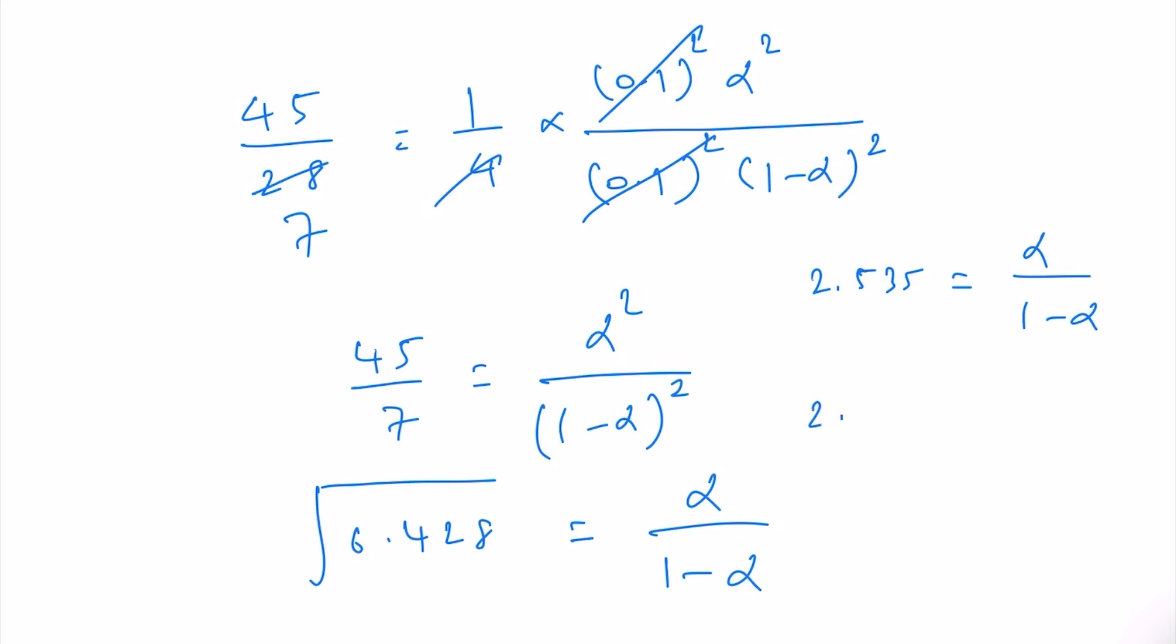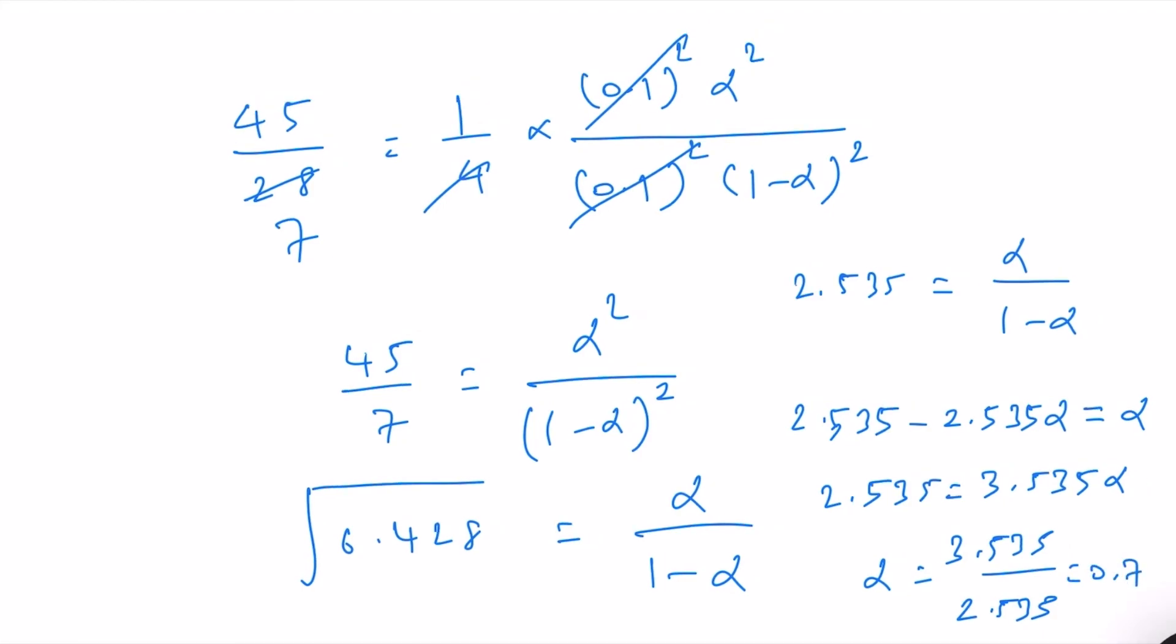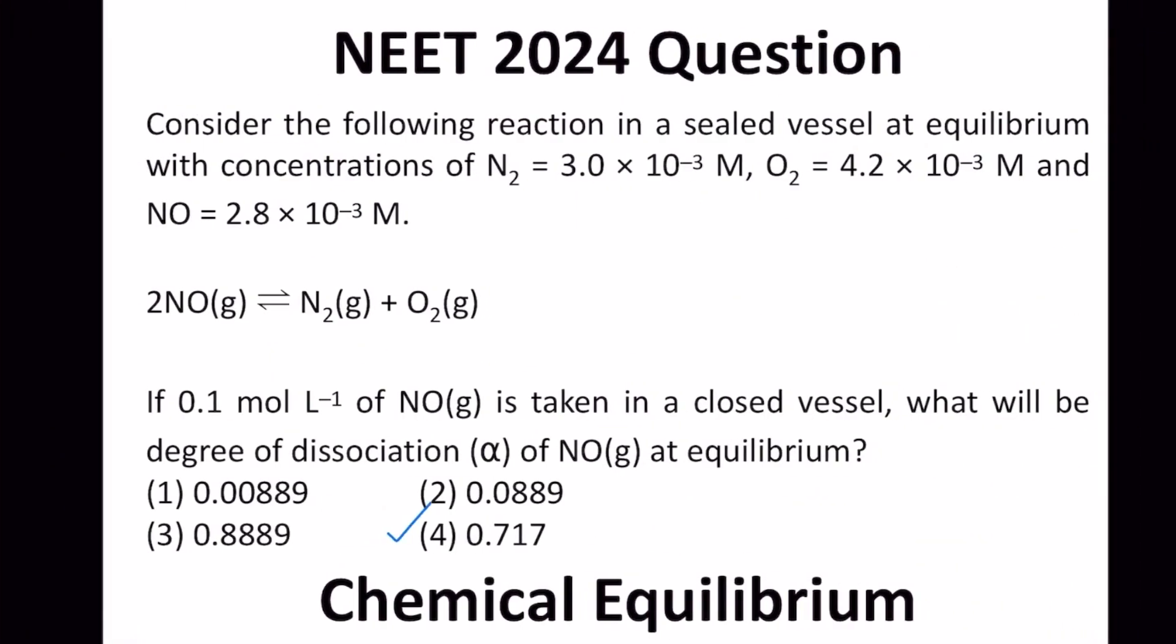So this will be 2.535 minus 2.535 alpha equal to alpha and therefore, we can write it as 2.535 equal to 3.535 alpha and therefore, alpha equal to 2.535 divided by 3.535 and that will be equal to 0.717 and therefore, option 4 is correct.